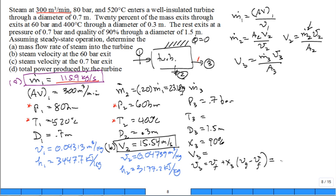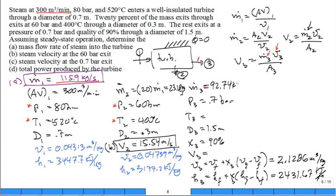The specific volume at state 3 comes in at 2.1286 meter cube per kilogram. And the same thing for enthalpy 3, H of F plus quality at 3 times H of G minus H of F. And you can get the quality, I mean, sorry, the enthalpy, 2431.67 kilojoules per kilogram. We'll need that in a second. So once I had the specific volume at 3, the mass flow rate at 3 is 80% of the mass flow rate at 1. So that mass flow rate at 3 comes in at 92.74 kilograms per second. And the area is pi d squared over 4.